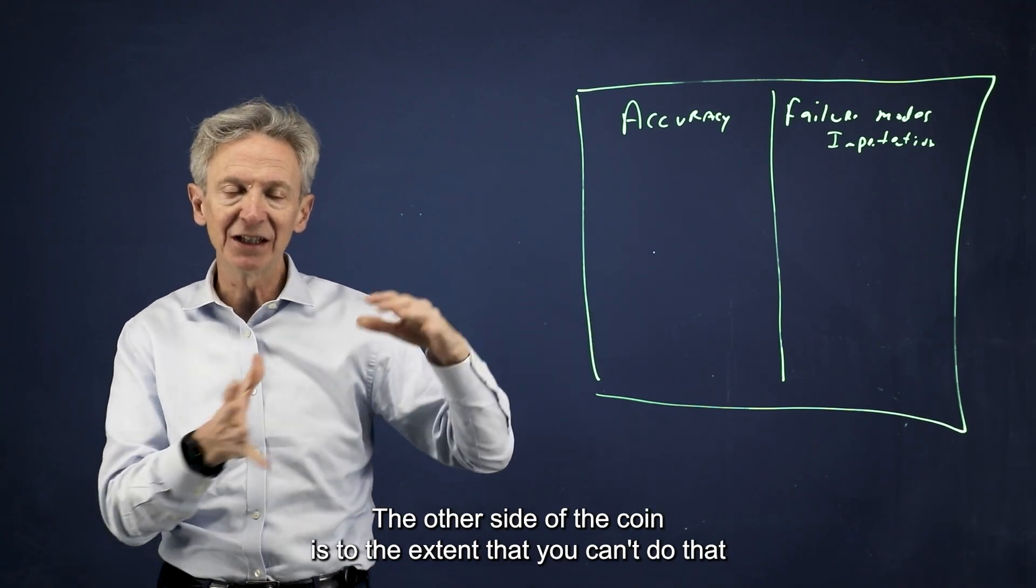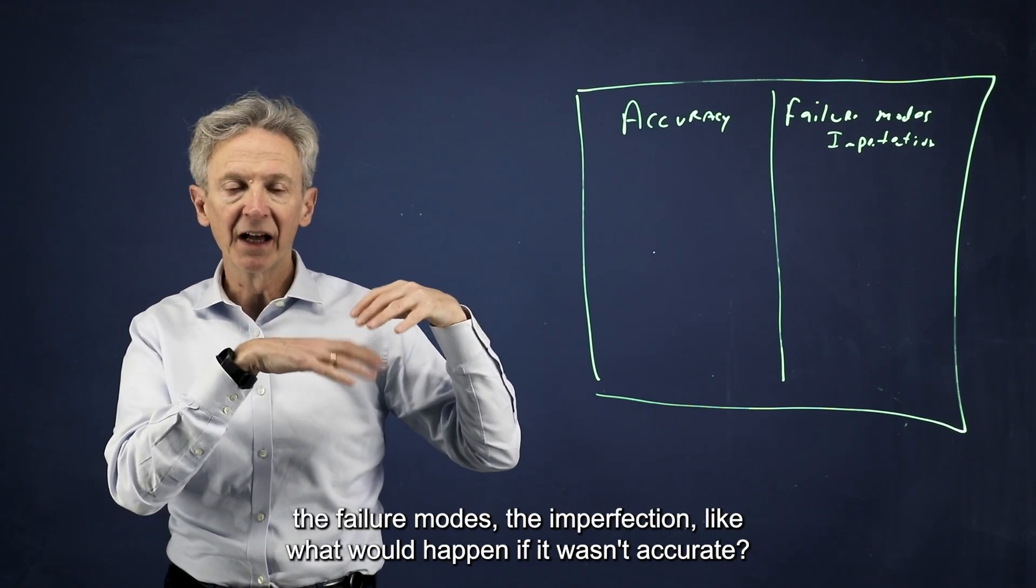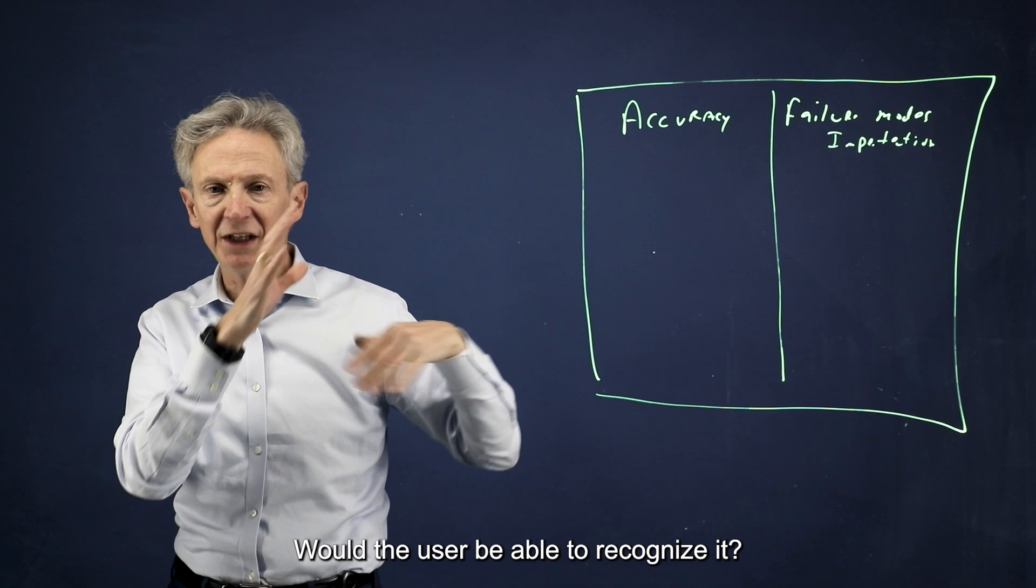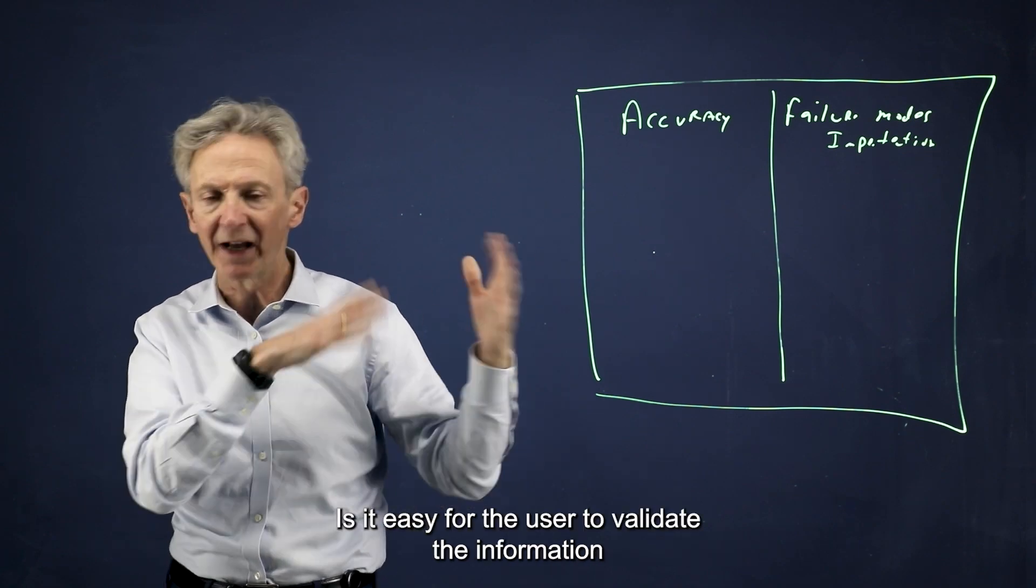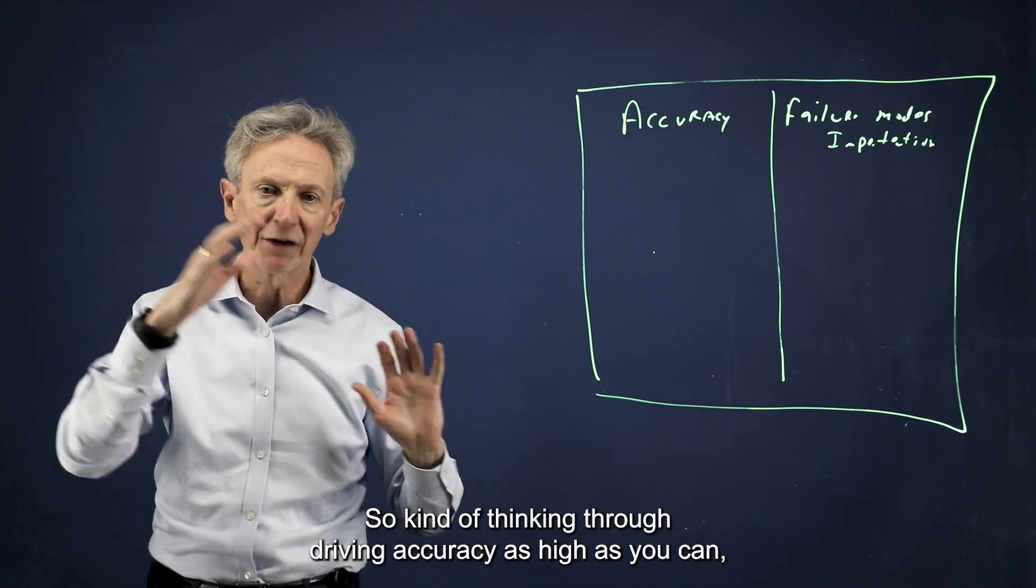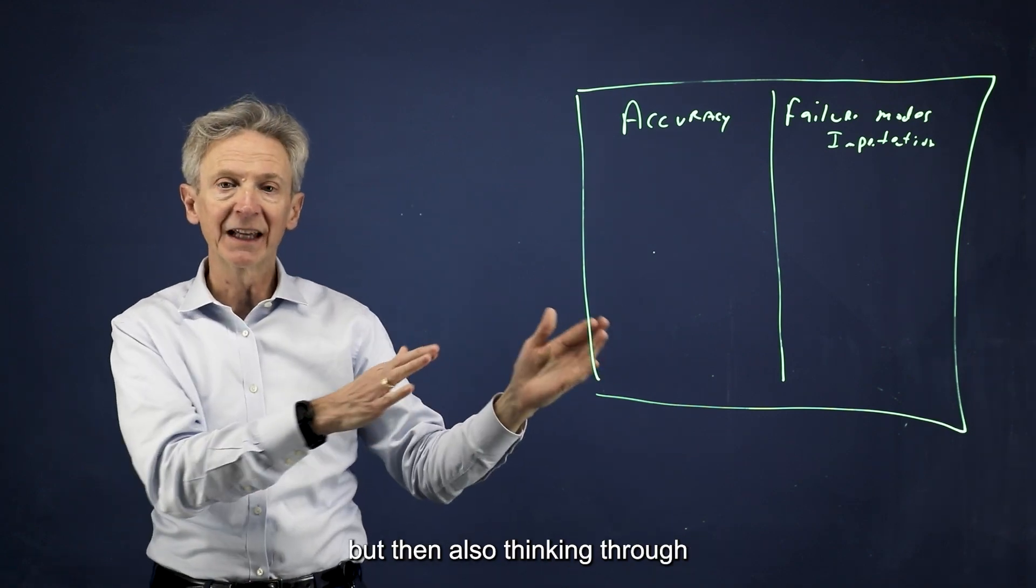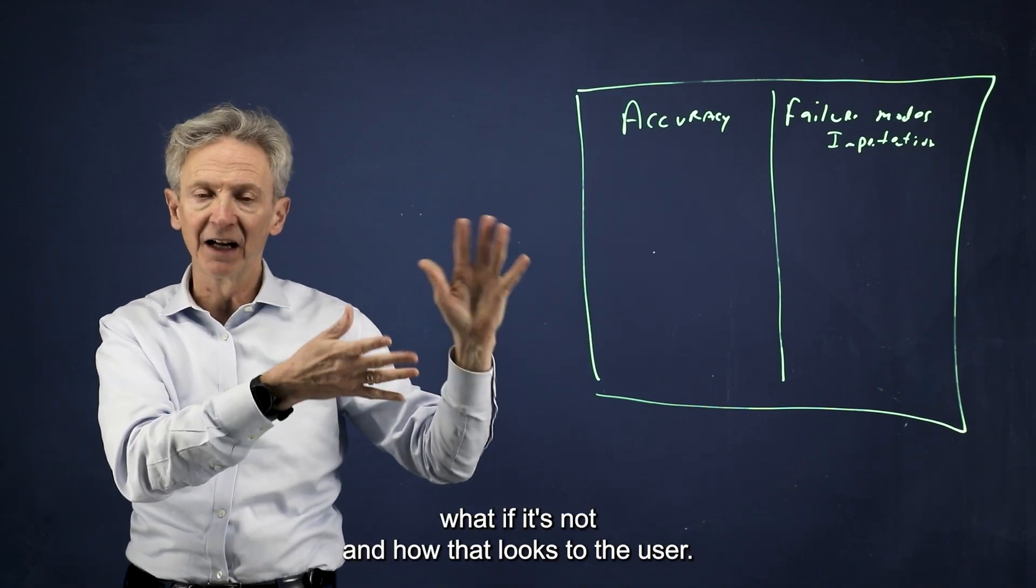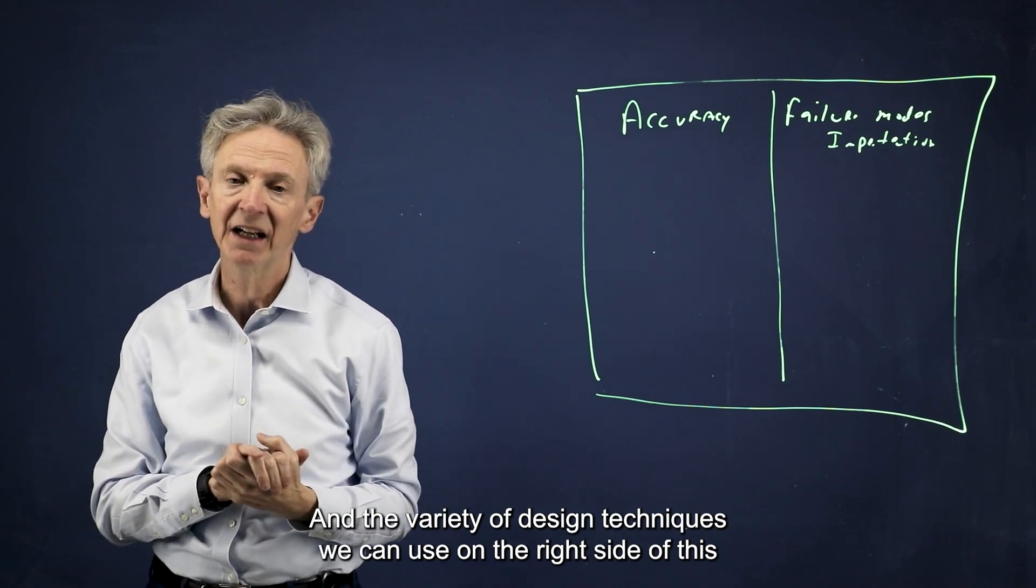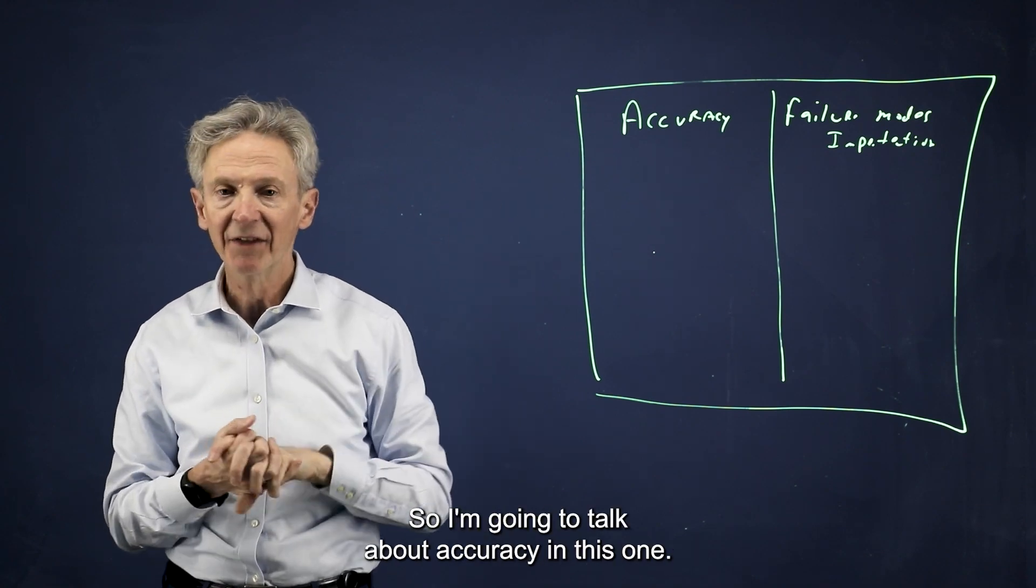The other side of the coin is to the extent that you can't do that all the time, that you think through and understand the failure modes, the imperfection. Like what would happen if it wasn't accurate? Would the user be able to recognize it? Is it easy for the user to validate the information that AI is providing him or her, that sort of thing? But that I will do in a future video. I'm going to talk about accuracy in this one.